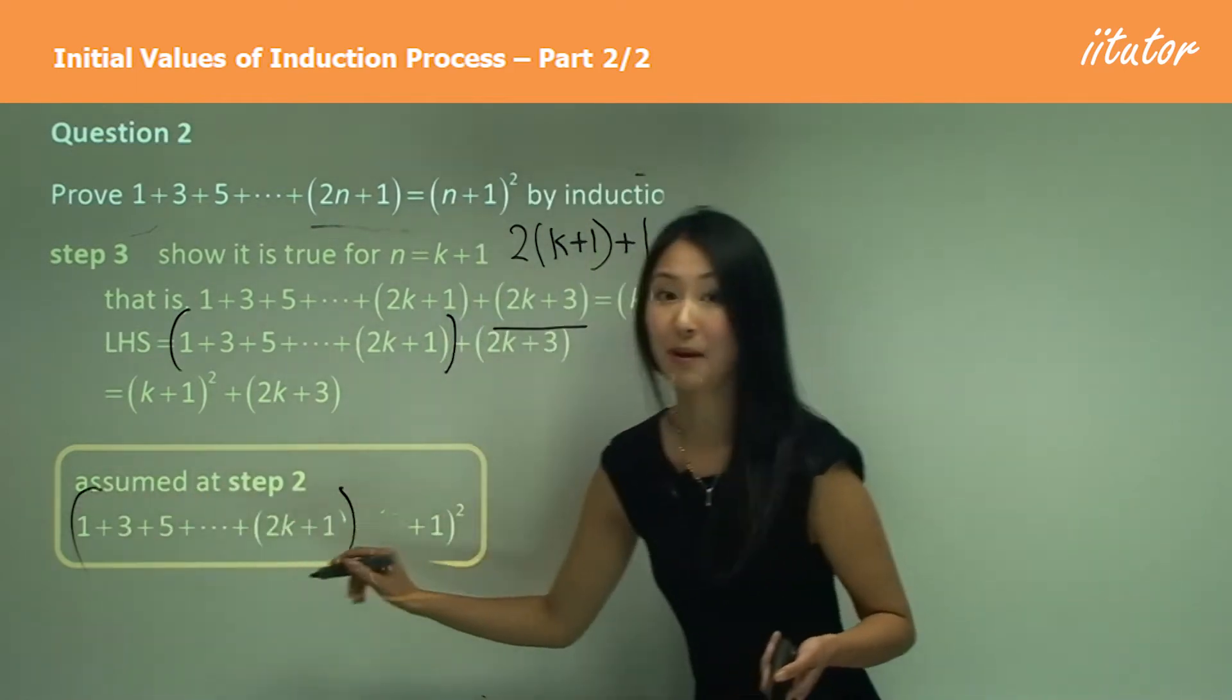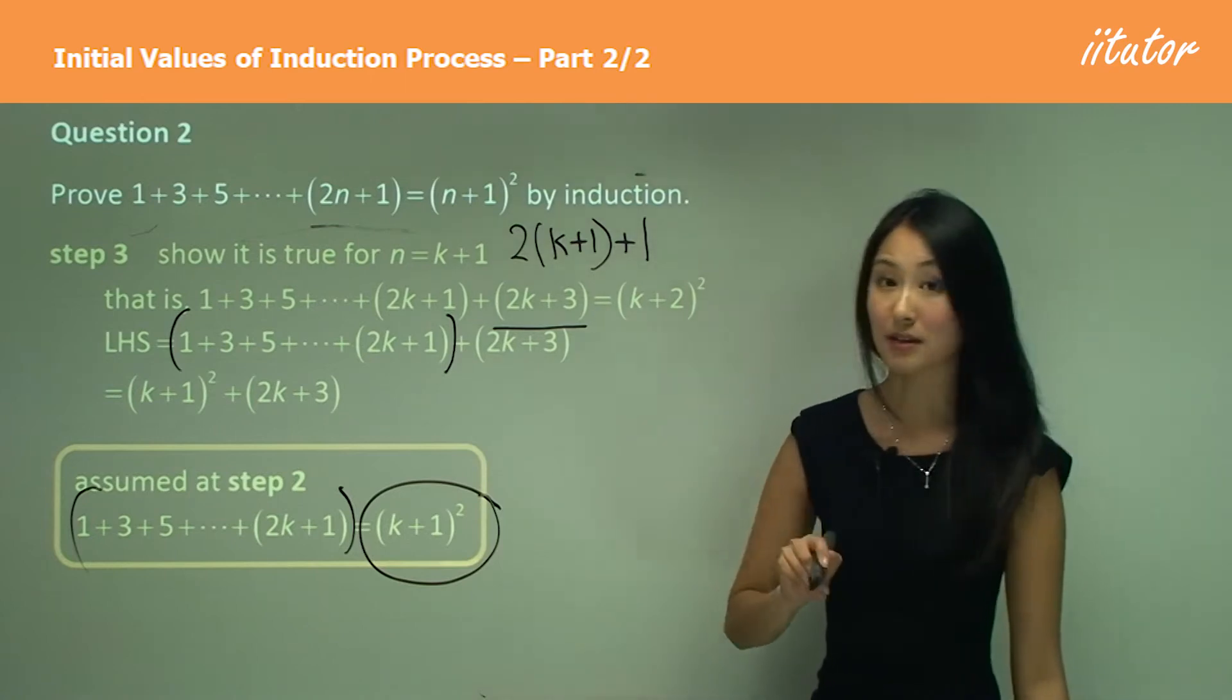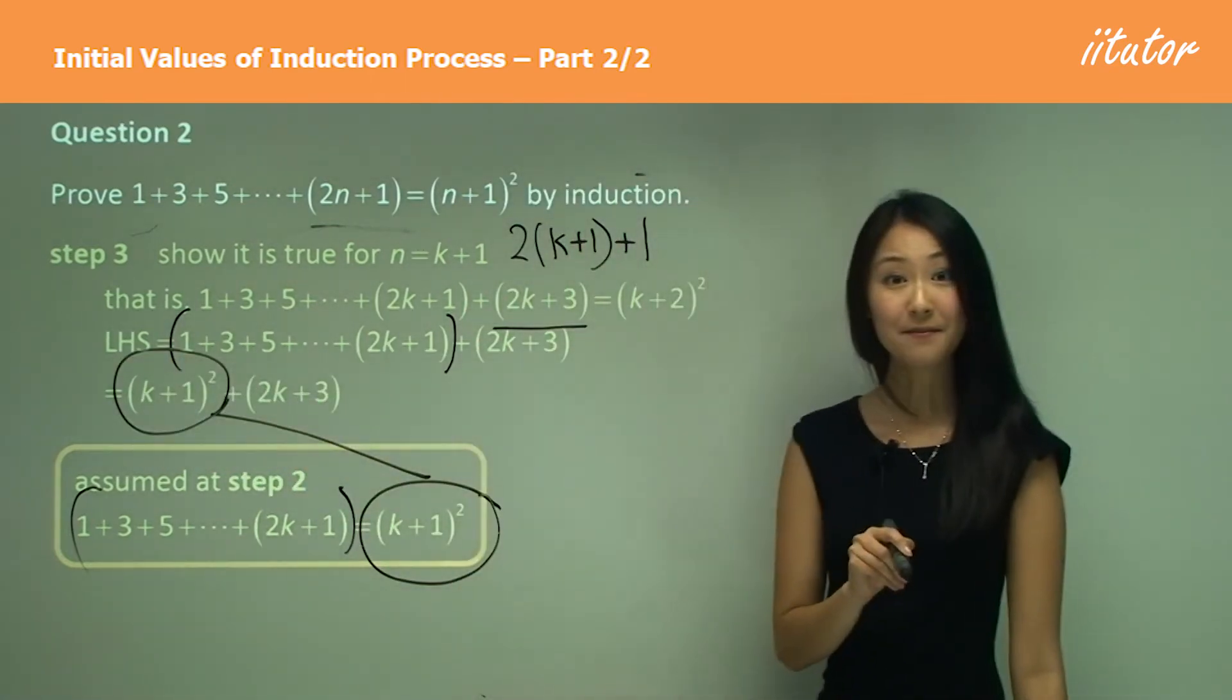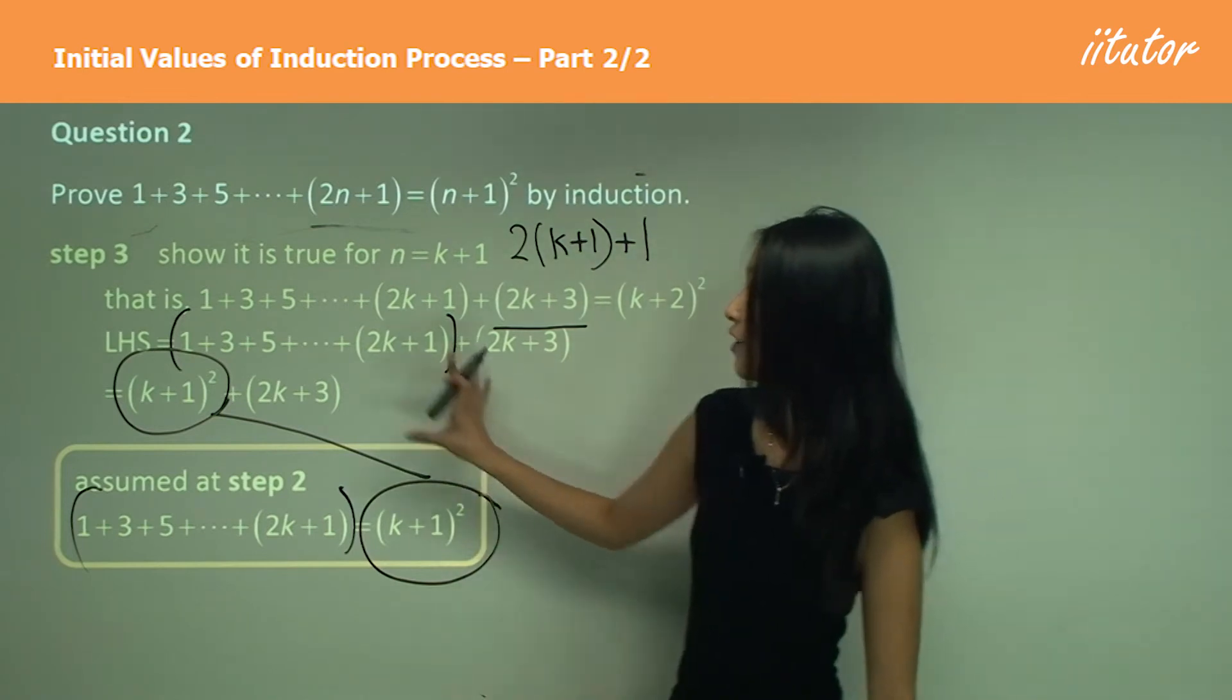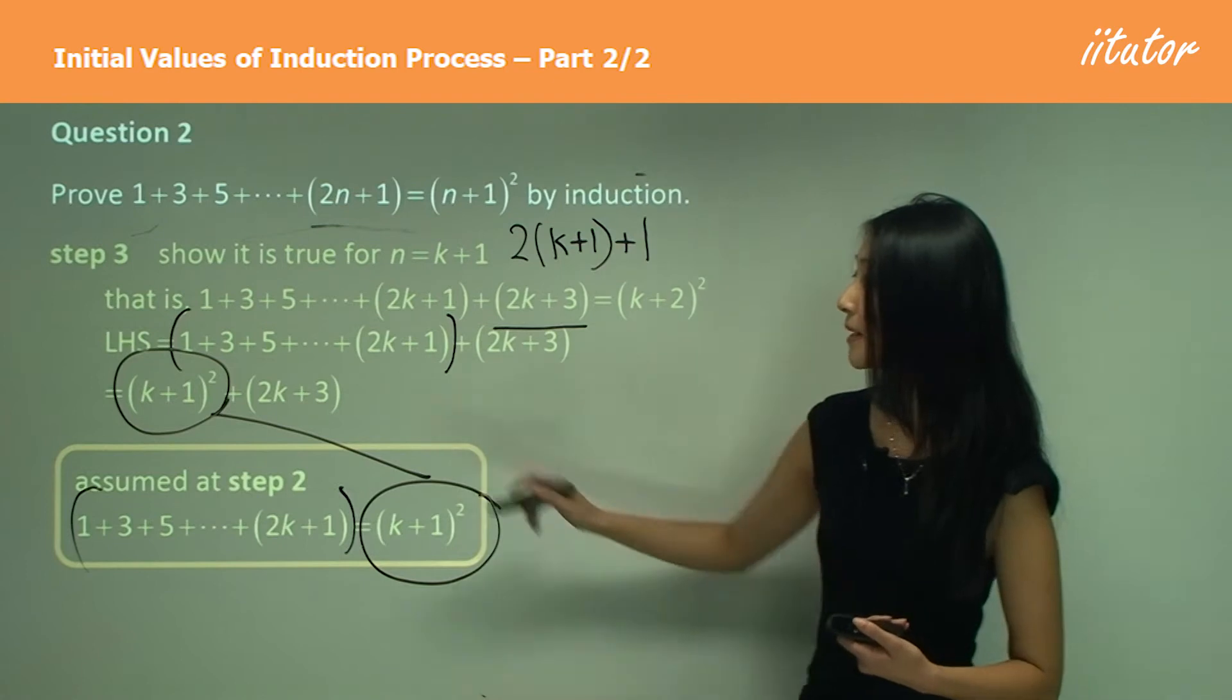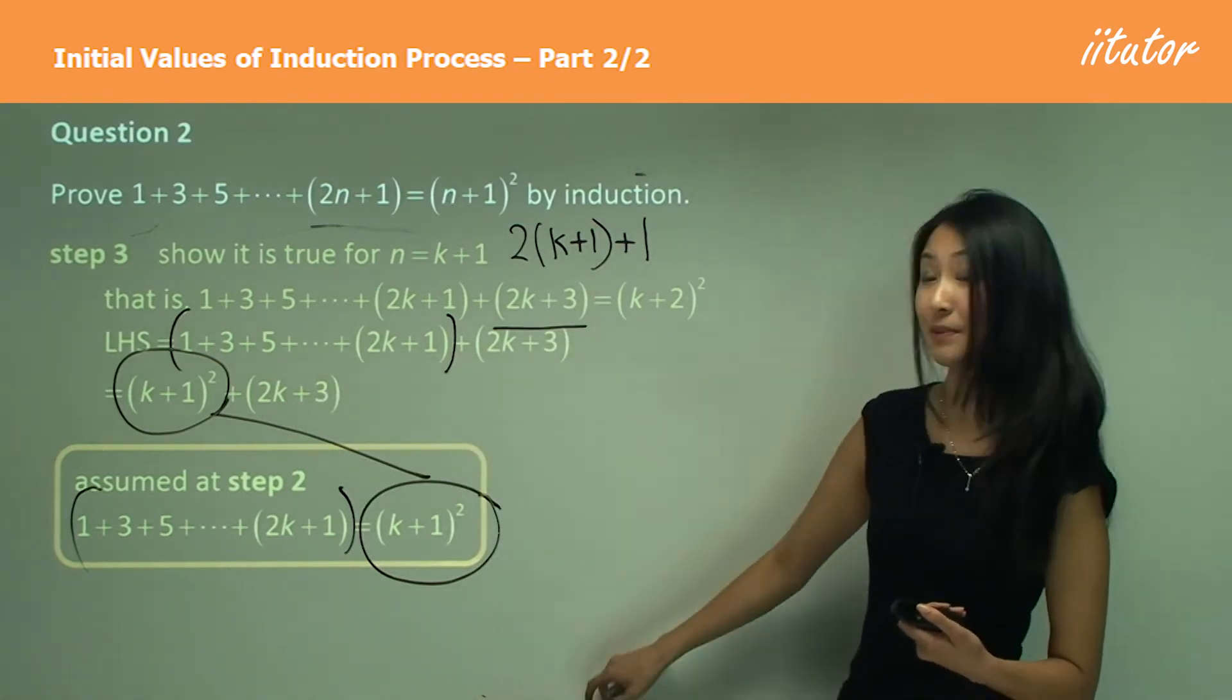So instead of writing that part, what I'm going to do is substitute k plus one squared into it. So I'm substituting that for this section. So now it's going to become k plus one squared plus remaining two k plus three.